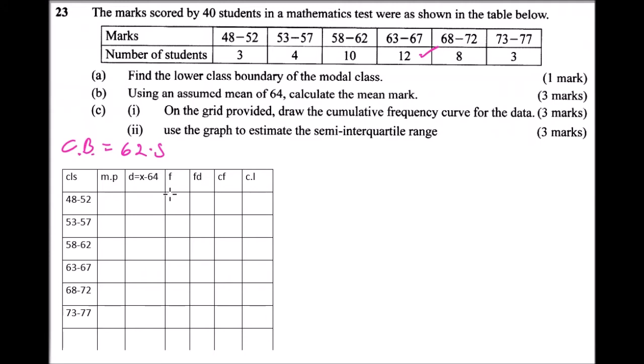So this is a table that you need to prepare. This is just to make your work easier. I have already inserted the classes. So here is a midpoint. And to get the midpoint, you need to subtract the upper class limit, you subtract the lower class limit. For example, you have 52, you subtract 48, that should give you 4. You divide by 2, you get it is equal to 2. So you add 2 to 48.